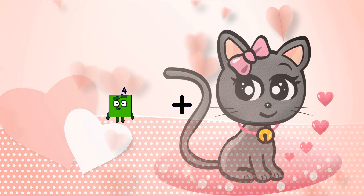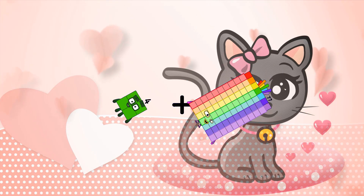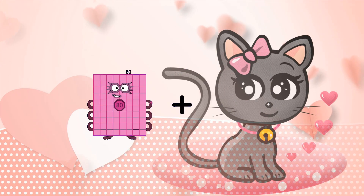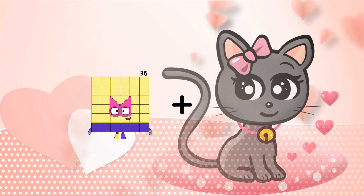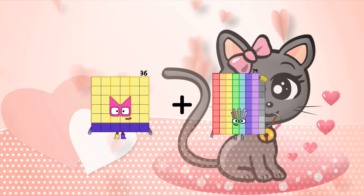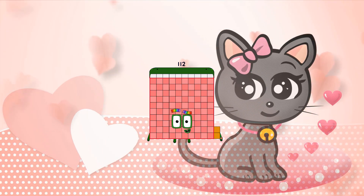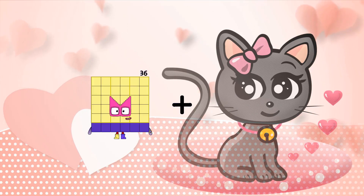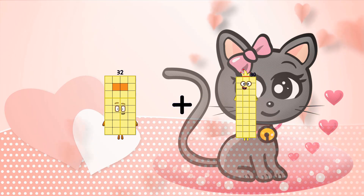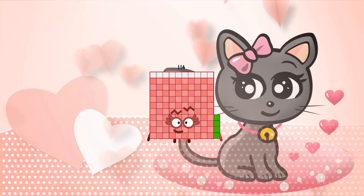4 plus 77 equals 81. 36 plus 76 equals 112. 32 plus 82 equals 114.